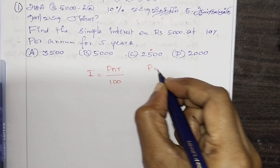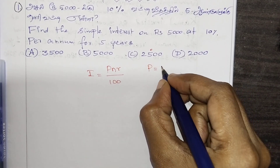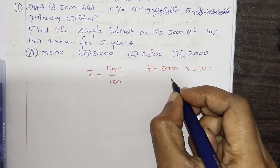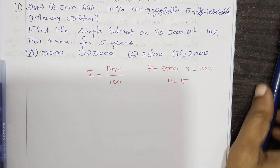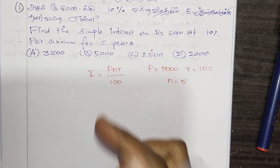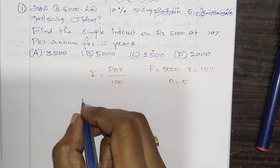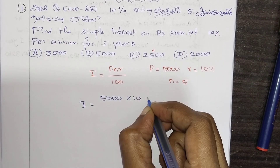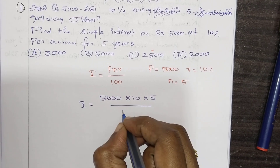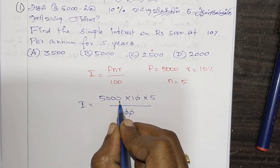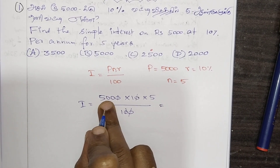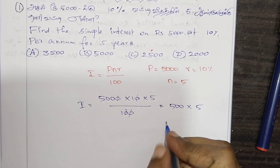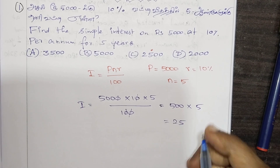PNR by 100. Principal amount is 5,000. Rate of interest — you can write this. Simple interest: I is equal to 5,000 into 10 into 5 divided by 100. So 10 into 10 is 100, and this gives 500.